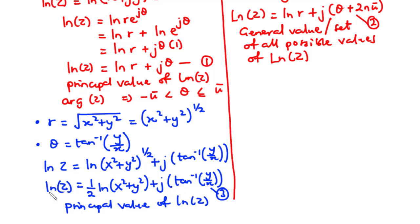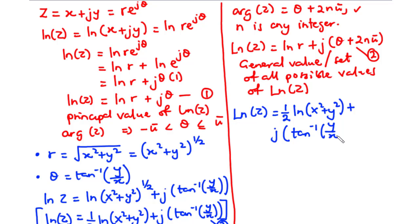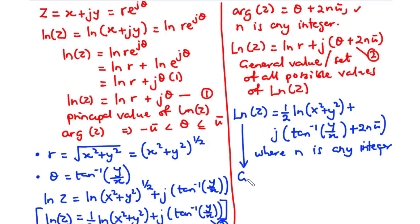Now for Equation 2: uppercase Ln z equals one half times ln(x squared plus y squared) plus j times (tan inverse of y over x plus 2n pi), where n is any integer. Let's call this Equation 4. This is how to find the general value of ln z. In our calculations, we are mostly going to use Equation 3 and Equation 4.